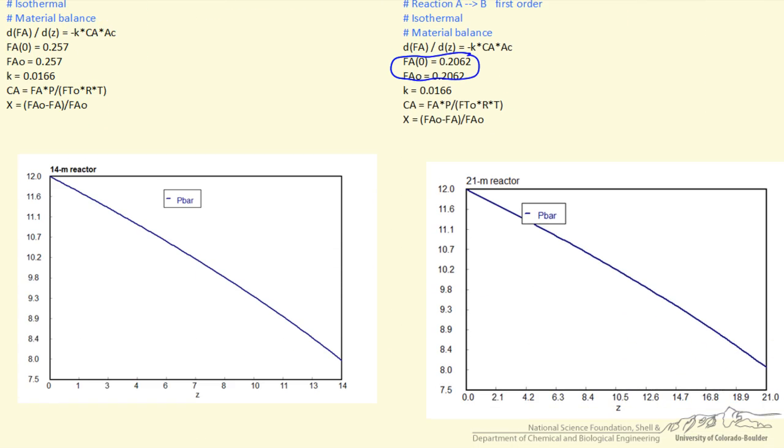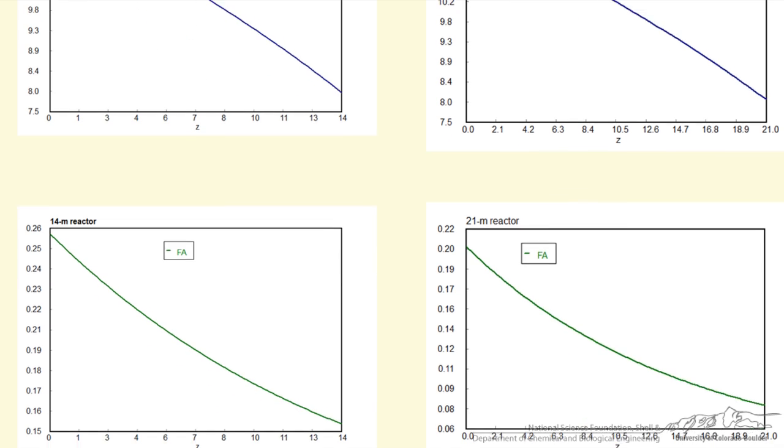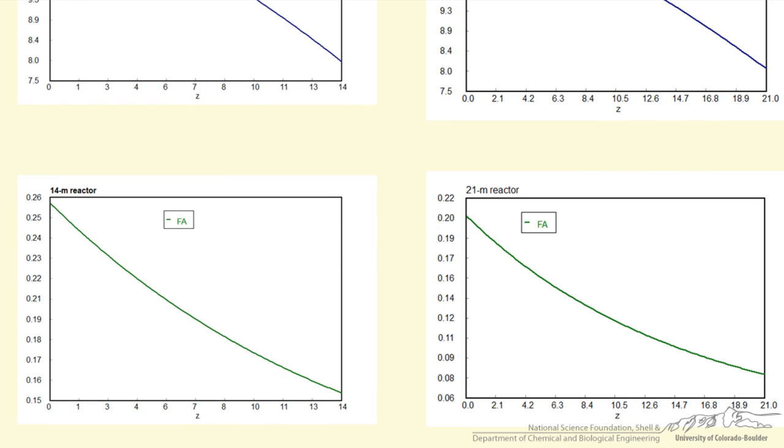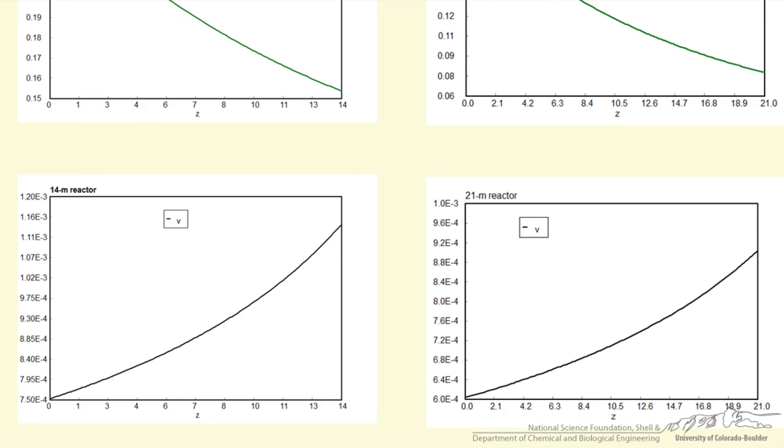So what happens? Well the 21 meter reactor, we're set up to have the same pressure drop. We picked the conditions to make that happen. Well the molar flow rate coming in is lower, and of course it coming out is even lower because we have more reaction time.